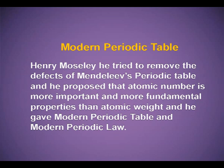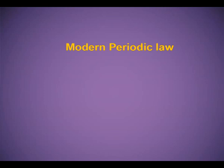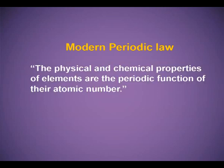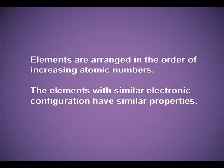Henry Moseley tried to remove the defects of Mendeleev's periodic table. He proposed that atomic number is more important and more fundamental property than atomic weight. He gave the modern periodic table and the modern periodic law. The modern periodic law states that the physical and chemical properties of the elements are the periodic function of their atomic number. He arranged elements in the order of increasing atomic numbers. Elements with similar electronic configuration have similar properties.